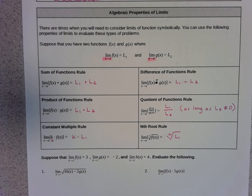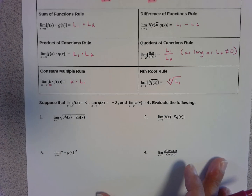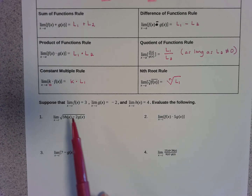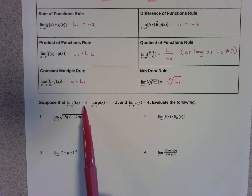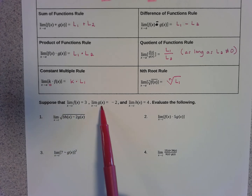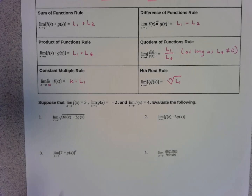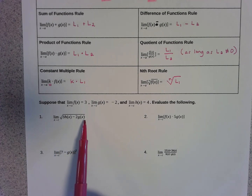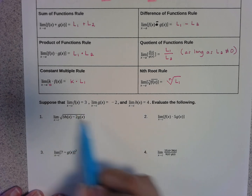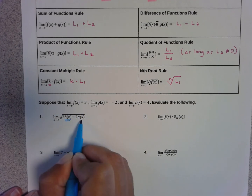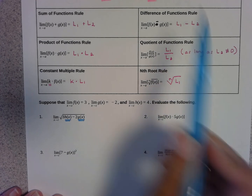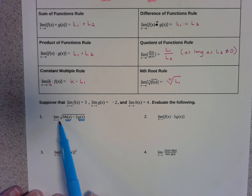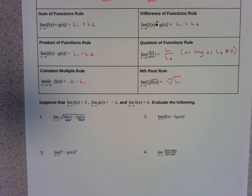This makes it sound really complicated, but it's really as simple as arithmetic. In these types of problems, you might be told that the limit as x approaches c of f(x) is 3, of g(x) is negative 2, and of h(x) is 4. If we want to find the limit as x approaches c of the square root of 3h(x) minus 2g(x), we just take the values from the directions and substitute them for h(x) and g(x), because these properties say you're allowed to take a root, multiply by numbers, and subtract.